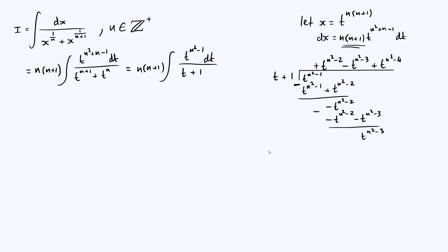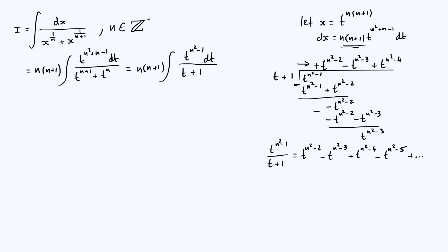Based on this pattern, we can write t to the n squared minus 1 over t plus 1 as: t to the n squared minus 2, minus t to the n squared minus 3, plus t to the n squared minus 4, minus t to the n squared minus 5, and so on. We stop when we can't do any more division, and at that point we'll have some remainder term r of t divided by t plus 1, where r of t is the part that can't be divided further.